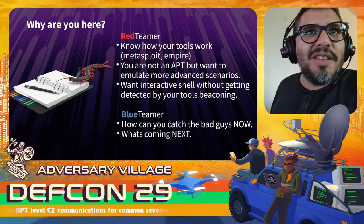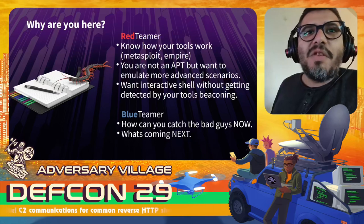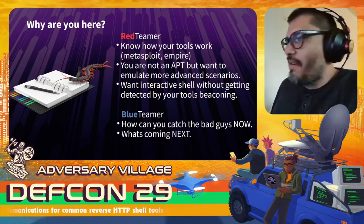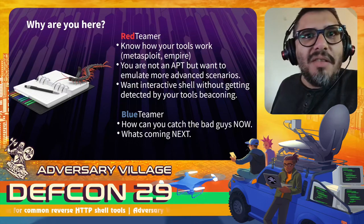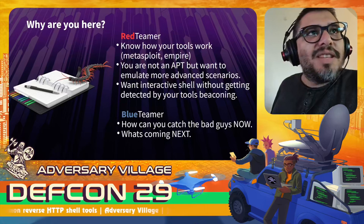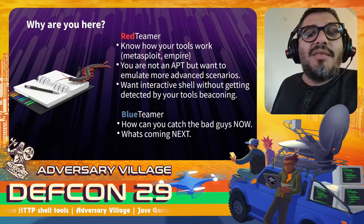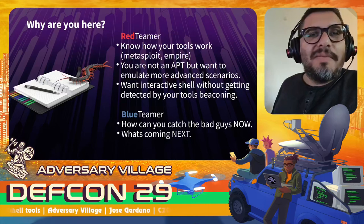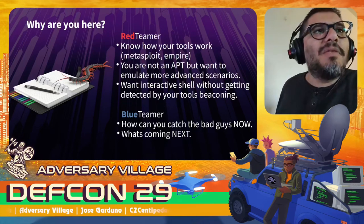You also want an interactive shell without getting detected by your tools' beaconing. For the blue team, of course the question is how can you catch the bad guys — I'll talk about some techniques you can use right now, and what's maybe coming next so you can see what the bad guys are planning.